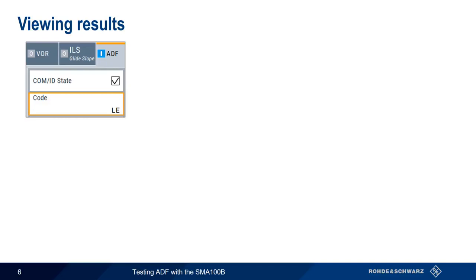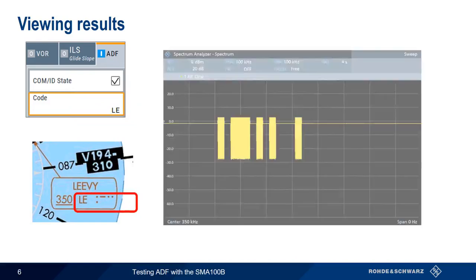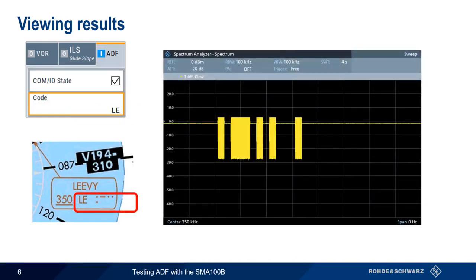The only interesting measurement we can make on ADF signals is the COMID. In this case, we're using the two-letter code LE. Most sectional charts actually show the pattern of DITs and DAs for people whose Morse code may be a bit rusty. We can look at this pattern using a spectrum analyzer in zero-span mode, where the on-off pattern representing the letters L and E can clearly be seen.